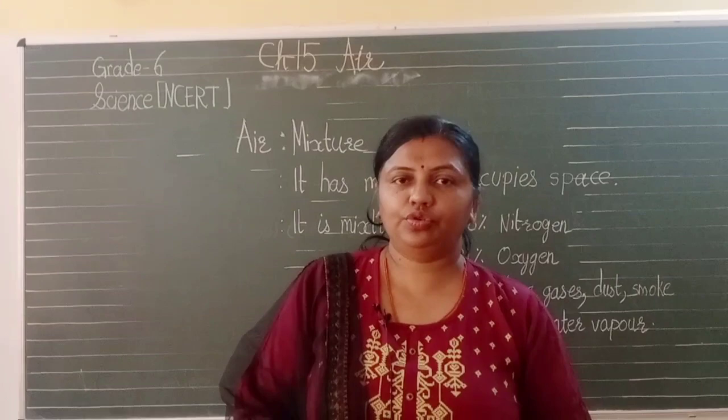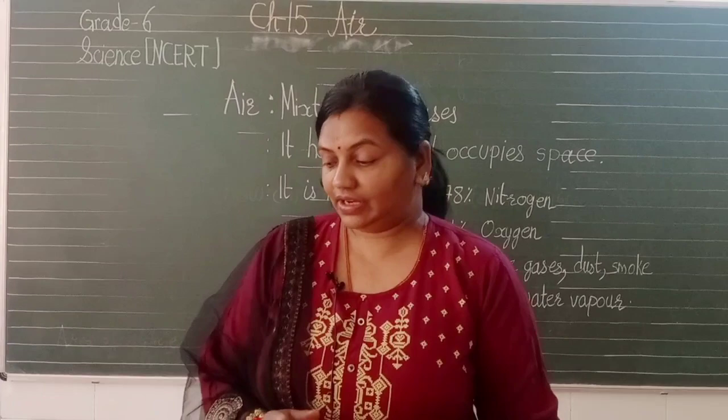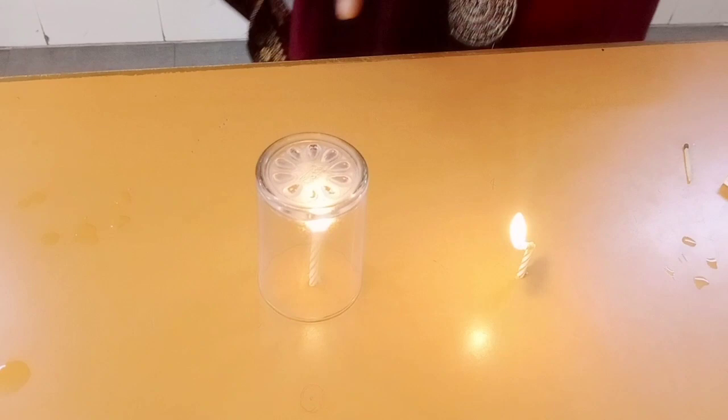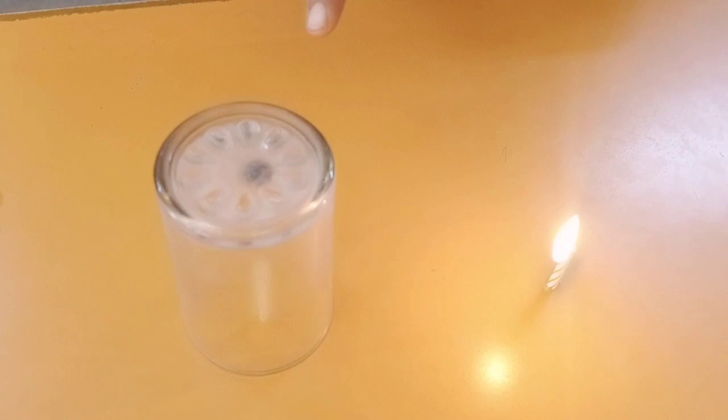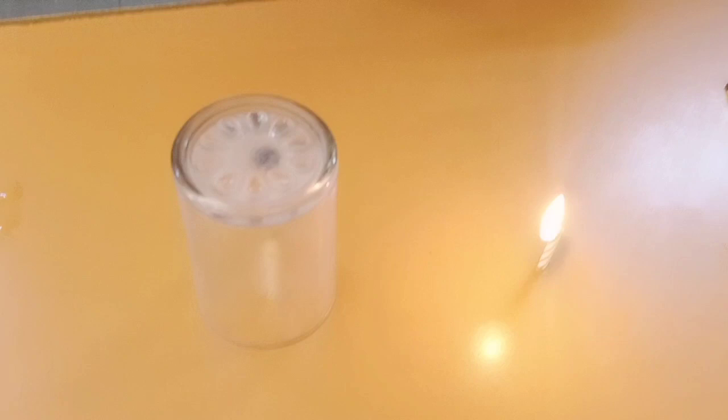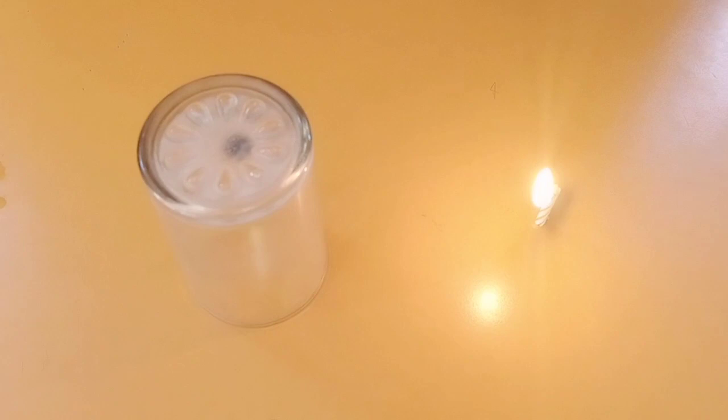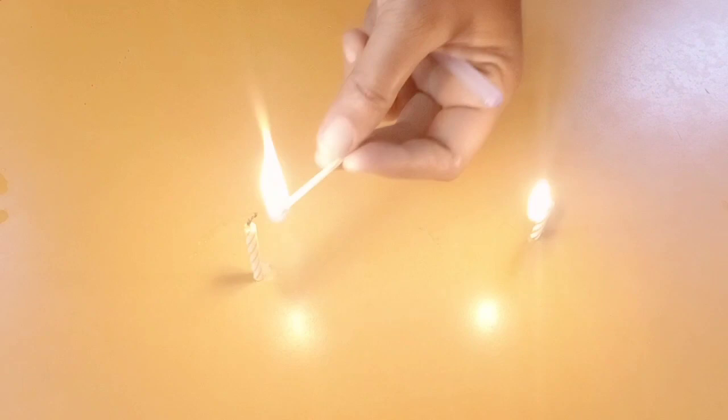Now let us perform another activity. Here I have two candles. I will light up the candles. One I am covering with a glass. You can see clearly that two candles are burning — and now one is extinguished. As soon as I cover it with the glass, it is extinguished. Why has this happened? Because for burning, air is very much necessary. Both the candles are burning — now I am covering one with the glass.